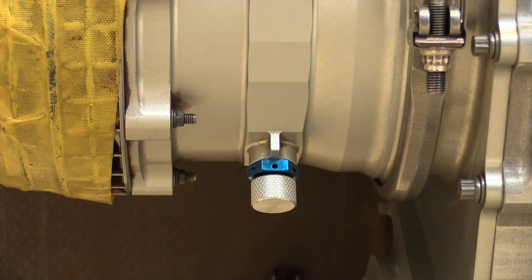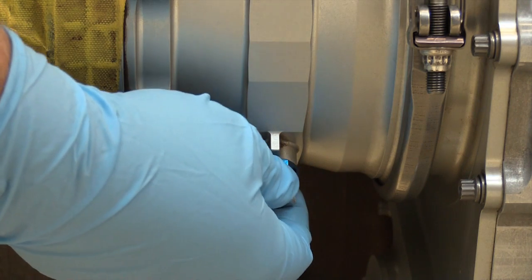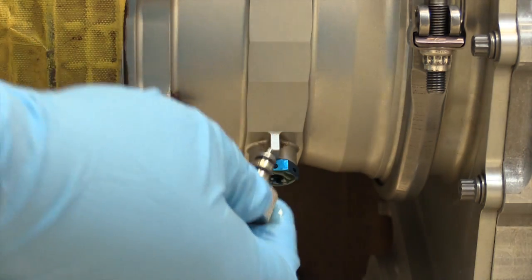To begin the procedure, the first thing that we need to do is remove the magnetic plug from the starter. To remove the plug, we need to push it in, rotate it counterclockwise, and then pull it out.